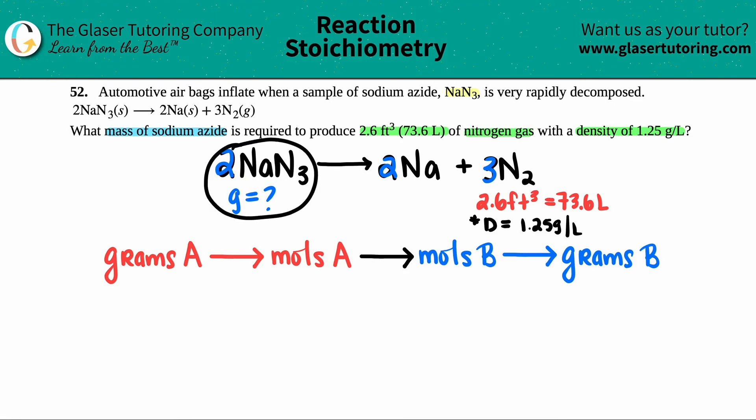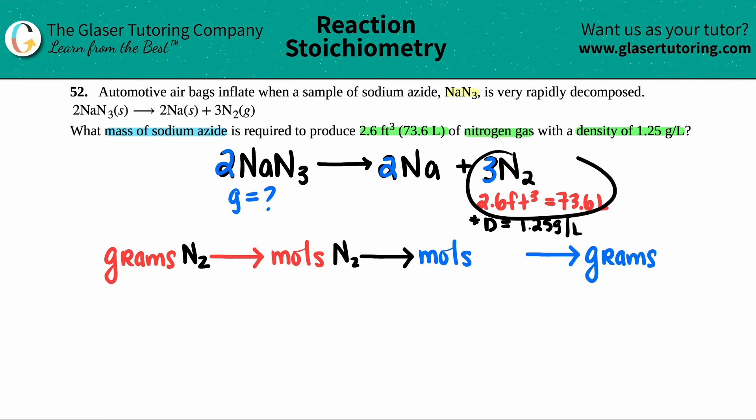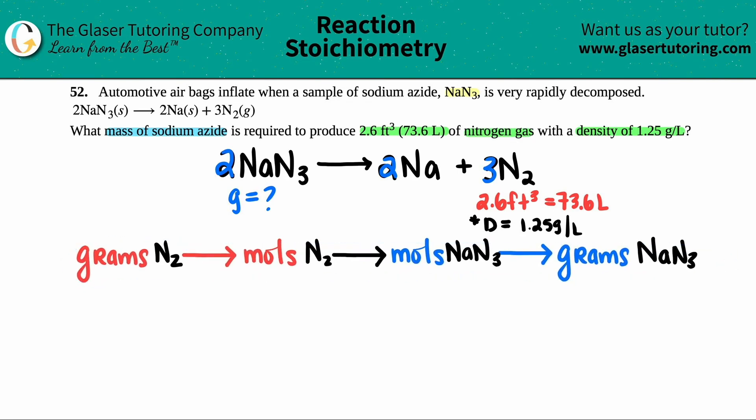So I color coded this for you. I'm looking for NaN3, so that's going to be the blues, and I have this information, so that's got to be the reds. So we have to start with grams of N2 to go to moles of N2, because that's the starting material. And then I can go to the moles that I want, which is NaN3, the sodium azide, and then I can finally get the grams of NaN3. Stoichiometry is grams to moles to moles to grams.